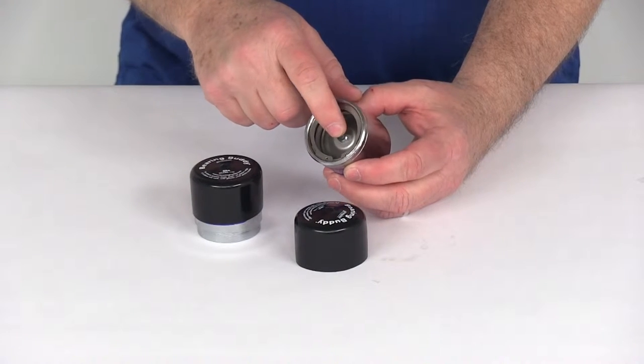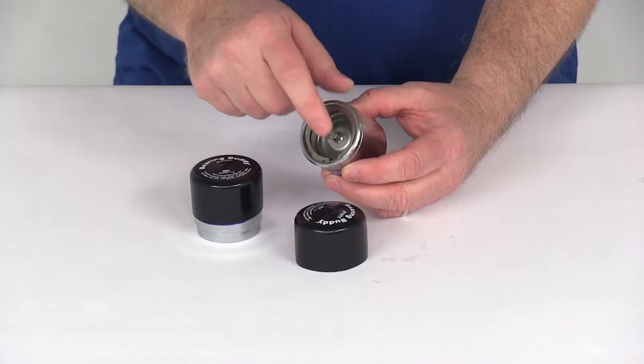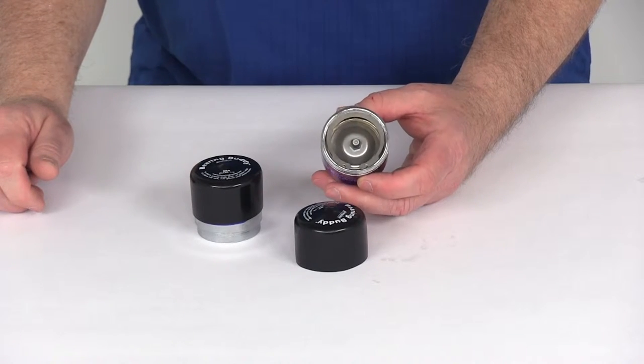This provides an easily accessible grease zerk fitting right here on the end, so you attach your grease gun to it, making adding grease to the bearings very quick and simple.